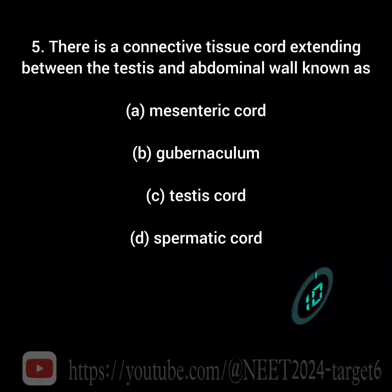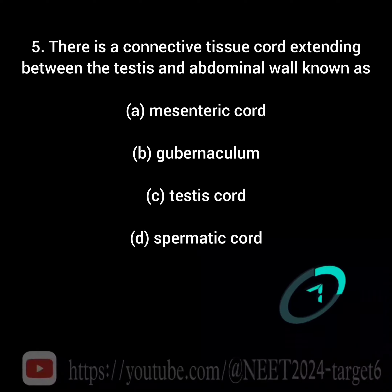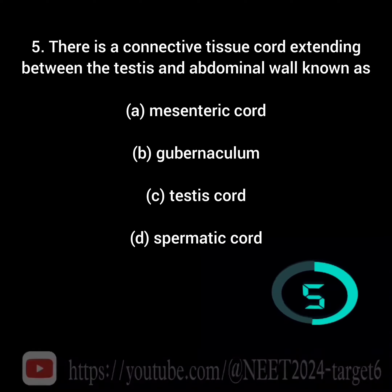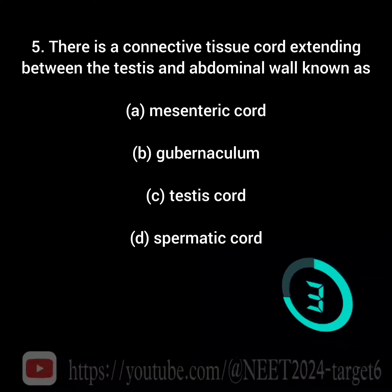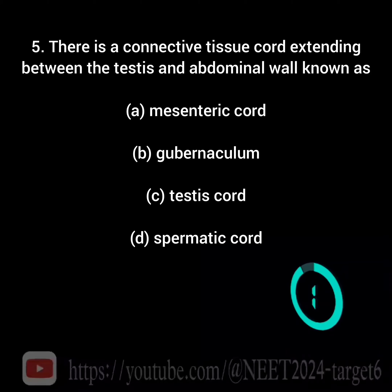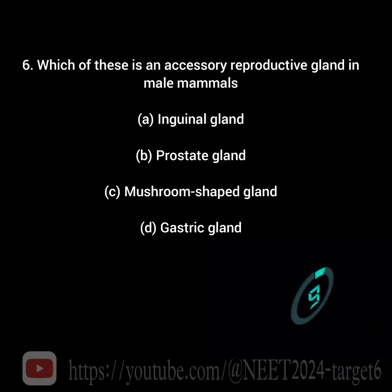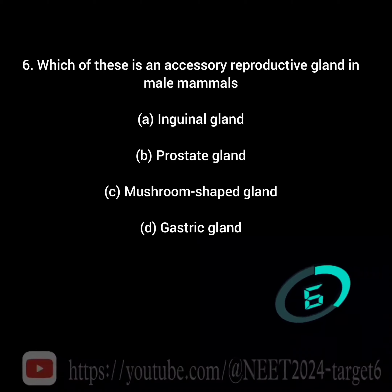There is a connective tissue cord extending between the testes and abdominal wall known as — which of these is an accessory reproductive gland in male mammals?